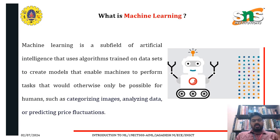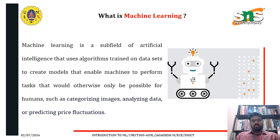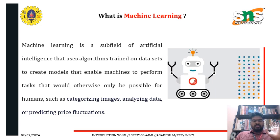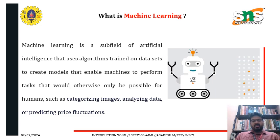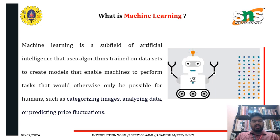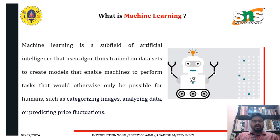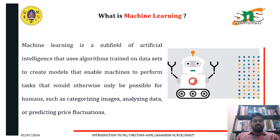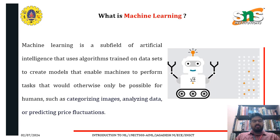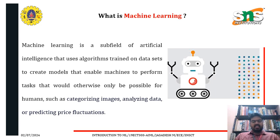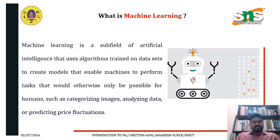So what is machine learning? Machine learning is a subfield of artificial intelligence that uses algorithms trained on data sets to create models that enable machines to perform tasks that would otherwise only be possible for humans, such as categorizing images, analyzing data, or predicting price fluctuations.